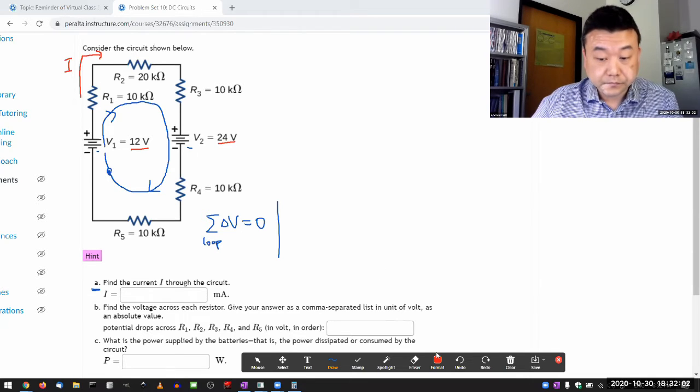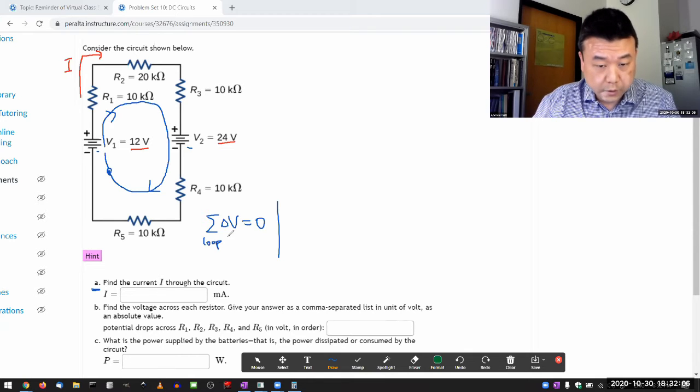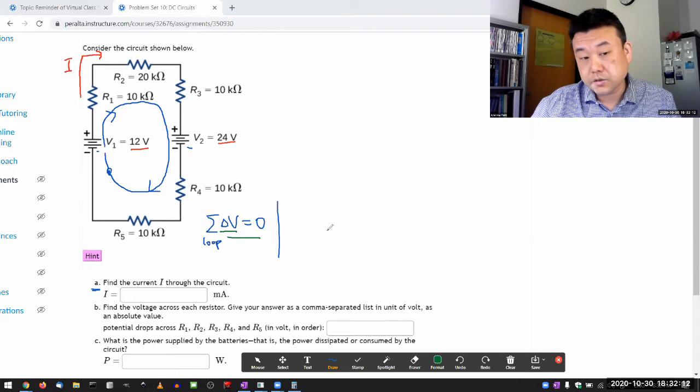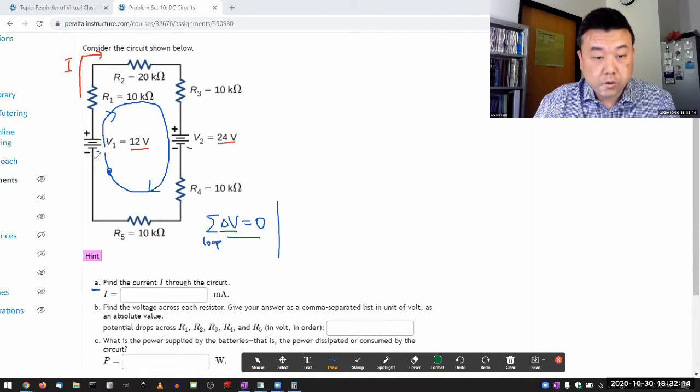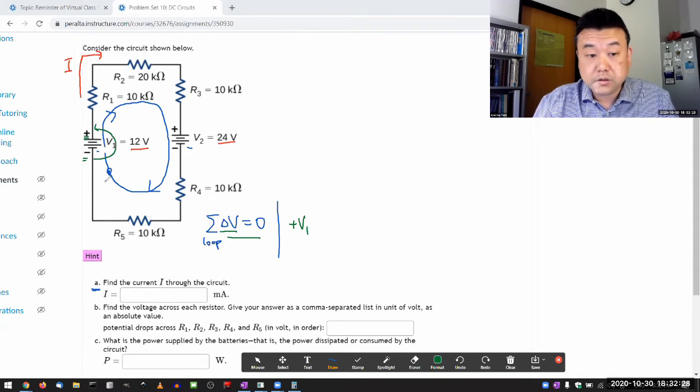So now what I need to do here is write down the loop rule equation. So I'm going across each element one at a time, collecting these voltage changes. So as I go across this battery, I collect a positive voltage change or plus V1. And this is the reason I'm going from the negative terminal to the positive terminal of the battery. So my voltage change is going to be positive, because I'm going from negative to positive.